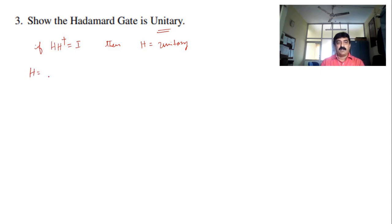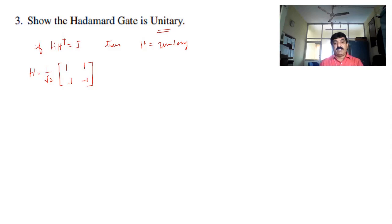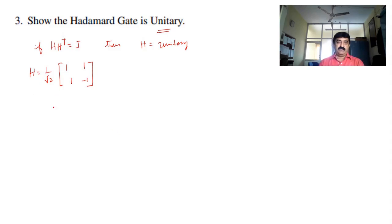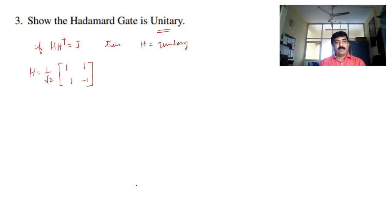First, I write the matrix form of the Hadamard gate: H = 1/√2 × [1, 1; 1, -1]. Dear students, you are supposed to remember the matrix form of each and every gate — not only the H gate, but even the T gate, S gate, and all other gates. All quantum gates are unitary. Why must they be unitary? Because when a gate operates on quantum states, the normalization condition must be retained: |α|² + |β|² = 1. Therefore the matrix must be unitary.